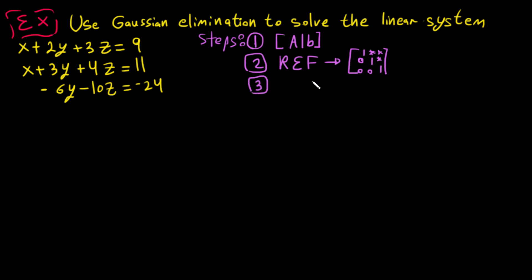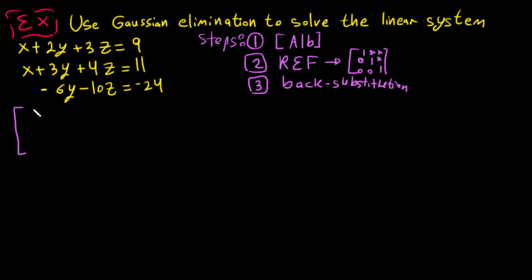Step three: we have to solve the system using back substitution. So we write the matrix like this: 1 2 3 | 9, then 1 3 4 | 11, then 0 -6 -10 | -24, and the last row is 0.